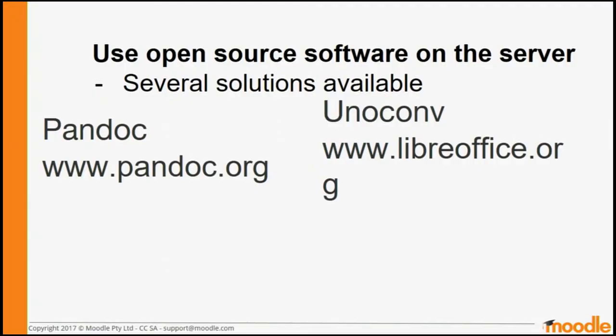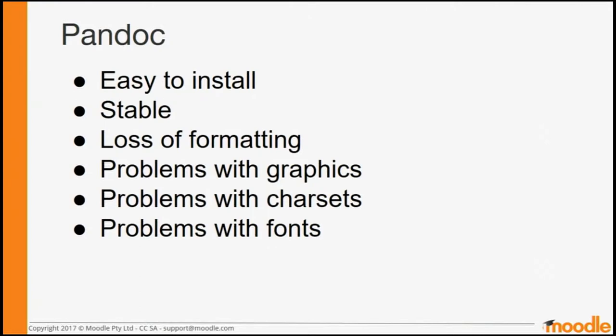There were two good choices for open source document conversions we looked at. The first was Pandoc and the second was Uniconv, which is part of OpenOffice or LibreOffice. Pandoc looked really promising until we started testing it with more complicated documents — basically the results didn't look anything like the files you send in. That's a big problem when you're trying to mark students' assignment submissions, because you don't want them marked down for poor formatting when it's actually a problem with the system.